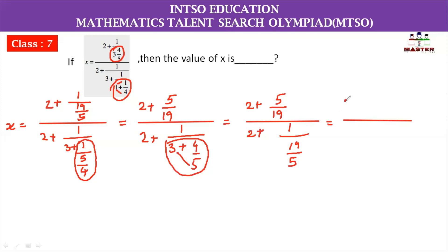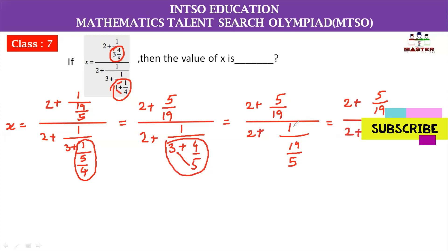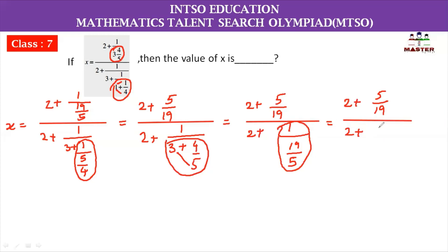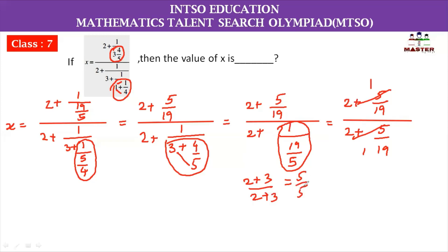So the numerator is 2 plus 5 whole divided by 19, and the denominator is 2 plus 1 divided by 19 by 5. We take the reciprocal, giving 5 by 19. Now we compute 2 plus 5 by 19 for both numerator and denominator, arriving at 2 plus 3 by 19.